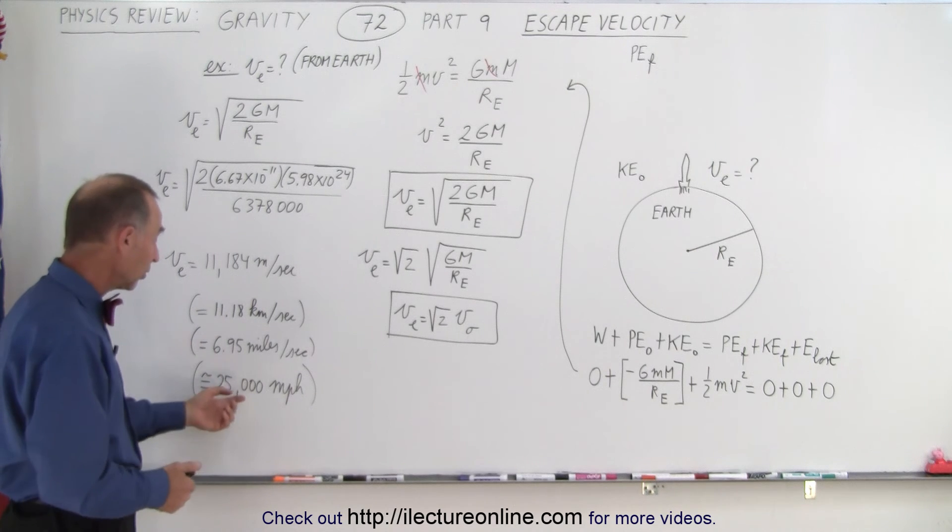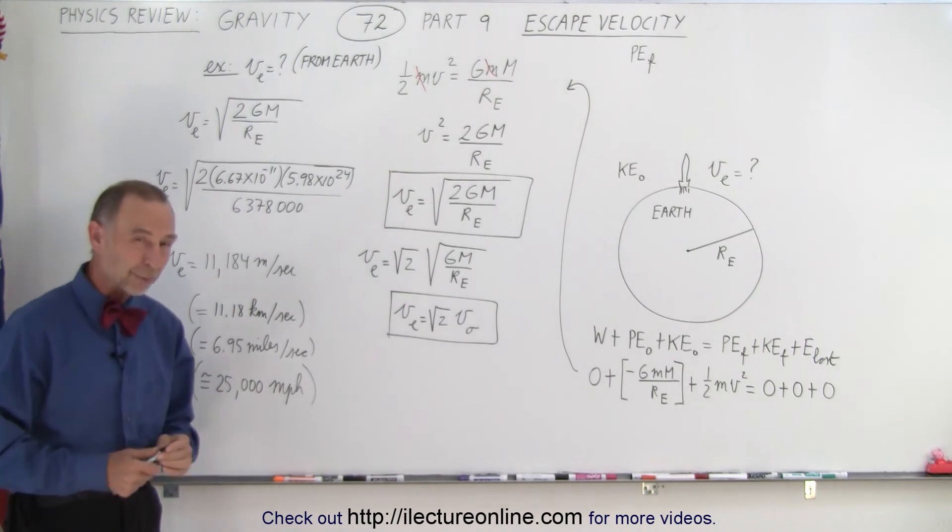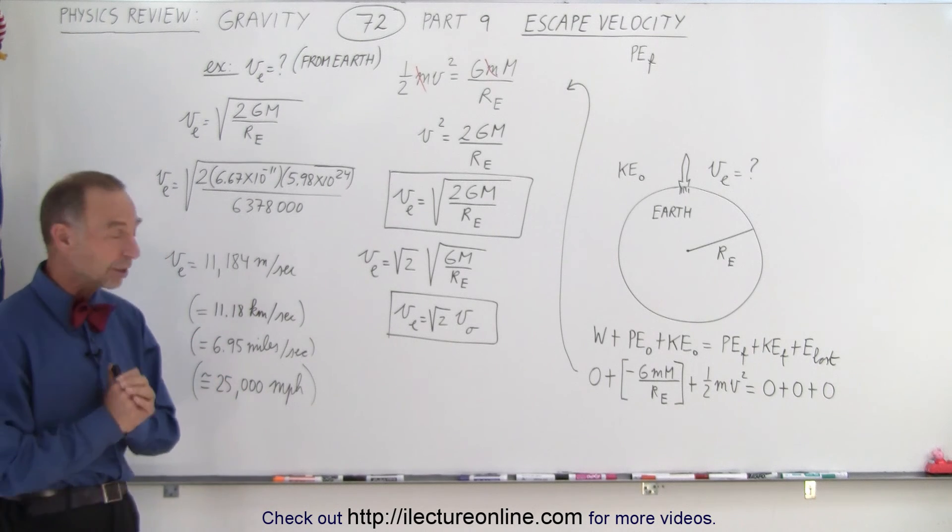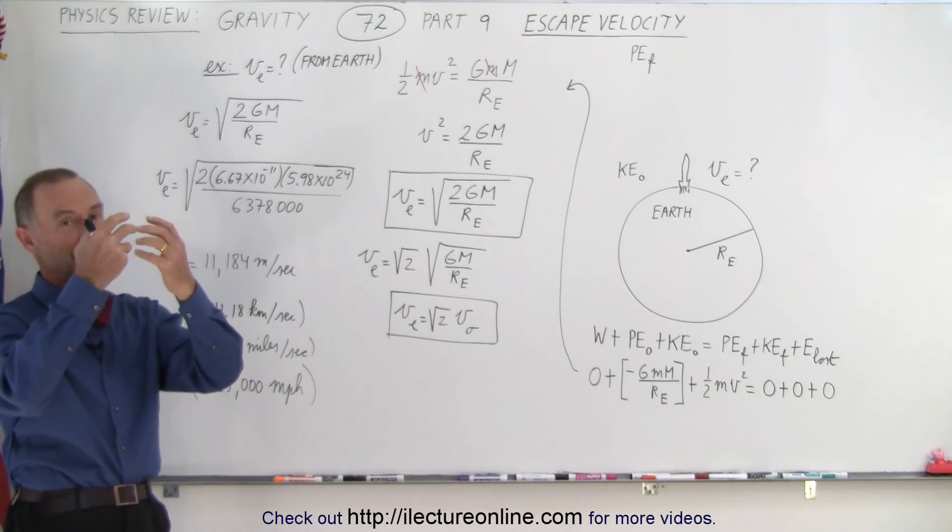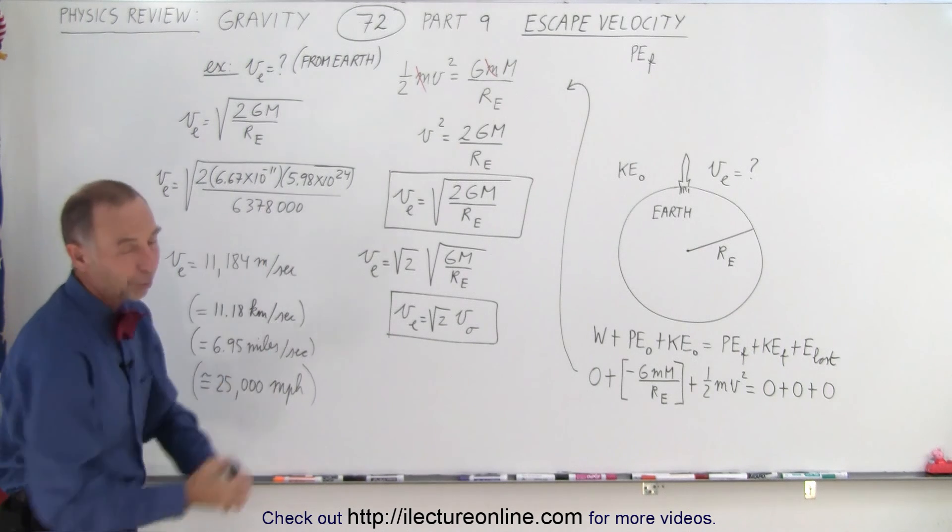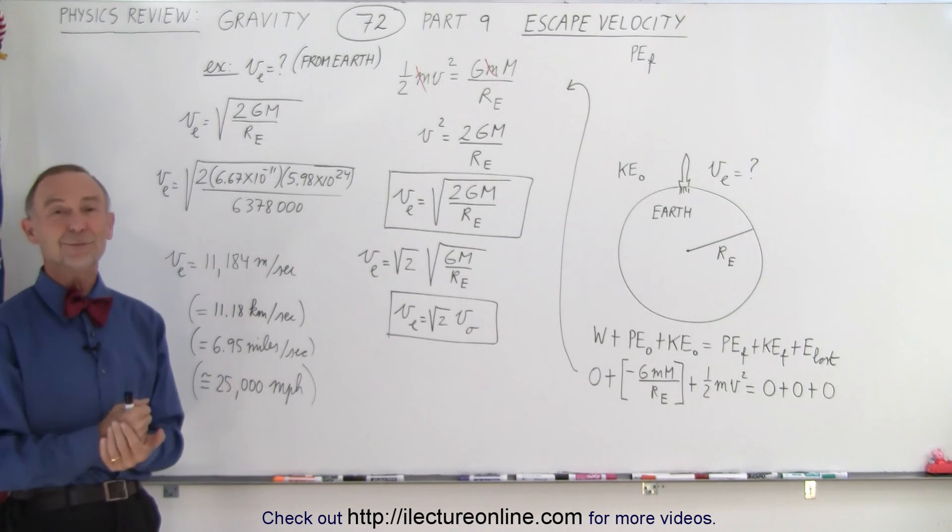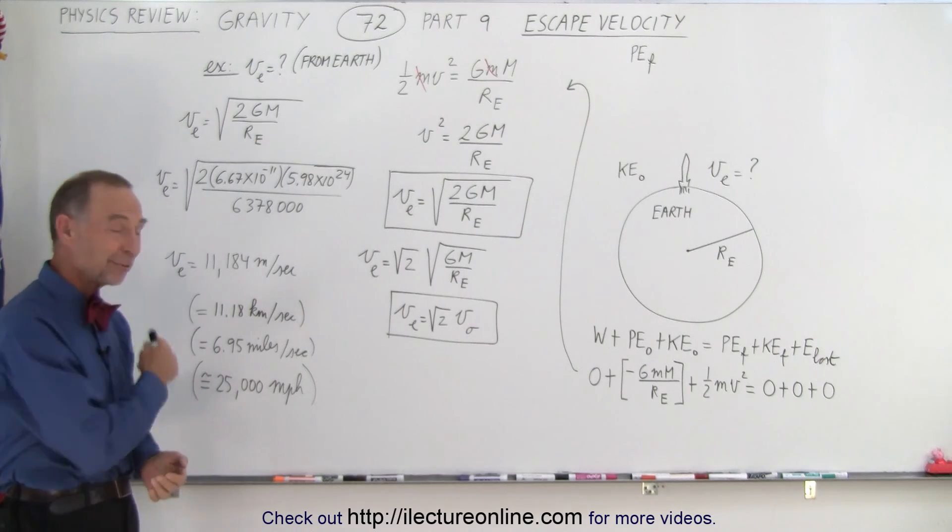So to send a rocket to the moon you must go at least 25,000 miles per hour which is about 40,000 kilometers per hour in order to get there. Otherwise the gravitational force of the Earth will just pull you right back and you won't make it to the moon and that is how it's done.